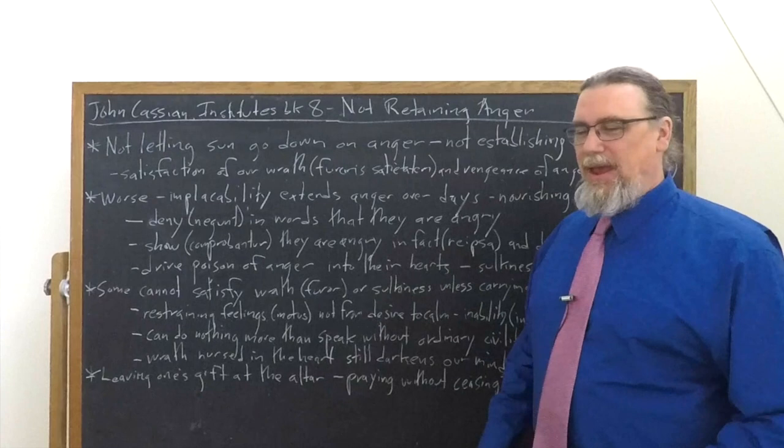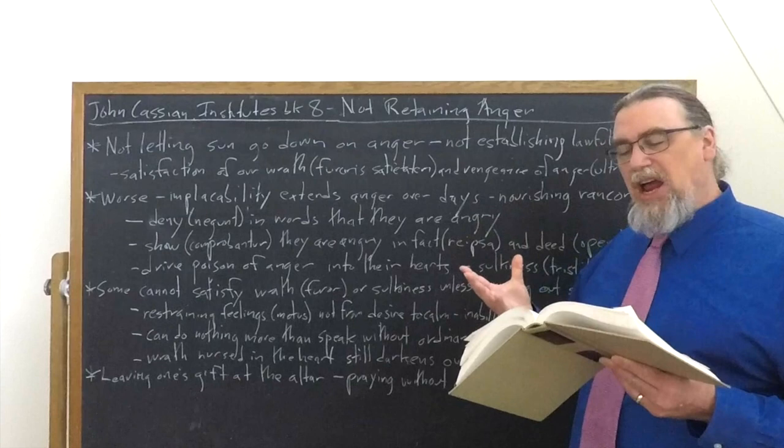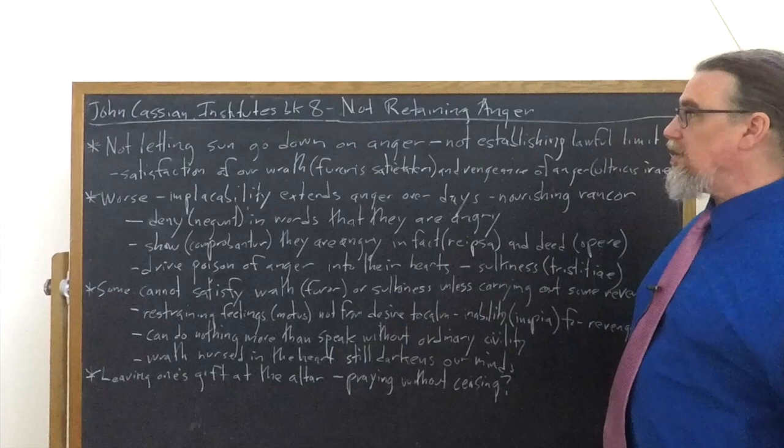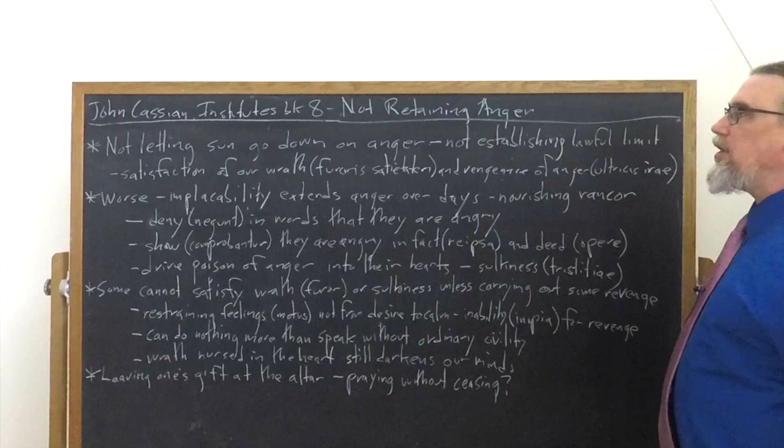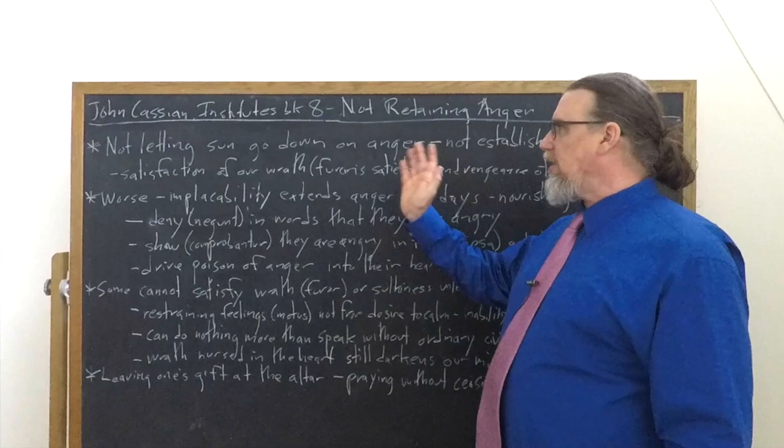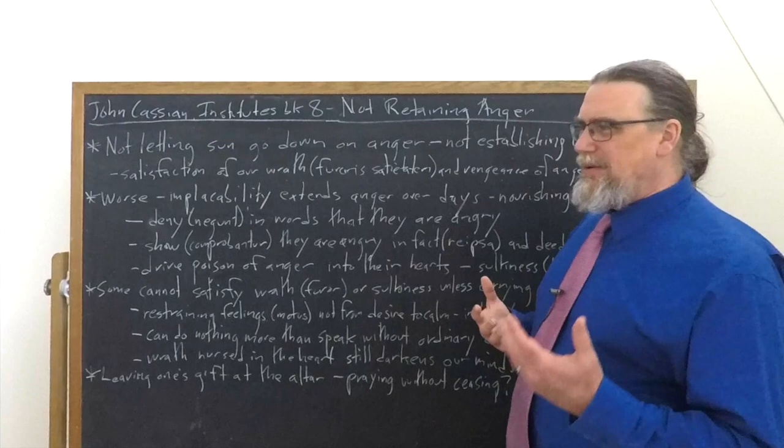And it's interesting here. I've remarked at different places that Cassian tends to use two different terms: furor, rage is how we translate it, and then ira, anger. And he talks about the satisfaction of our wrath, satiatatum furoris. So if we indulge that, we're going to have some problems. And then the vengeance of anger, otrikis irai. These are the two things that go hand in hand with each other.